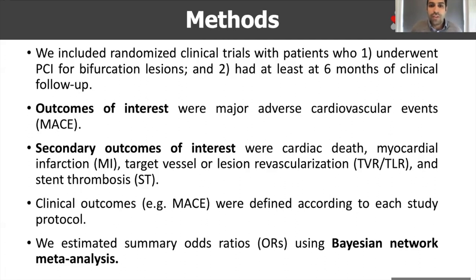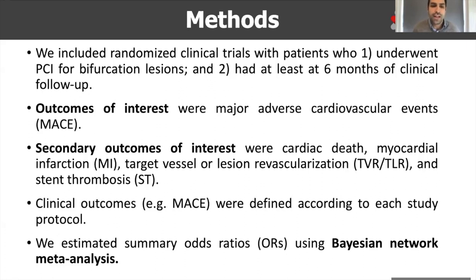We included randomized clinical trials with patients that underwent PCI for bifurcation lesions and had at least six months of clinical follow-up. The primary outcome of interest was major adverse cardiovascular events (MACE), defined according to each randomized clinical trial protocol. Secondary outcomes included cardiac death, myocardial infarction, target vessel revascularization, and the occurrence of stent thrombosis.